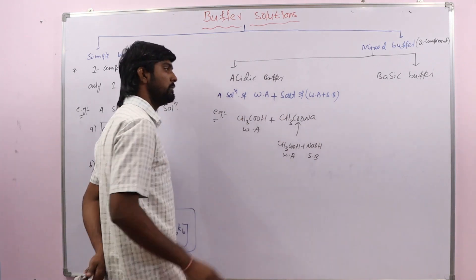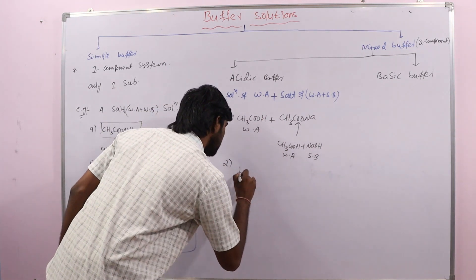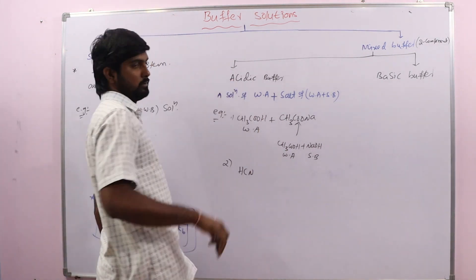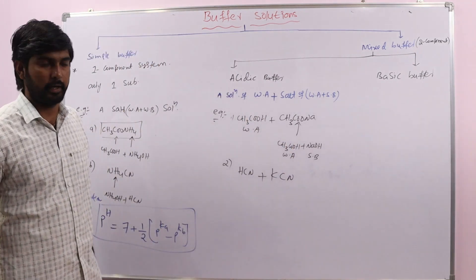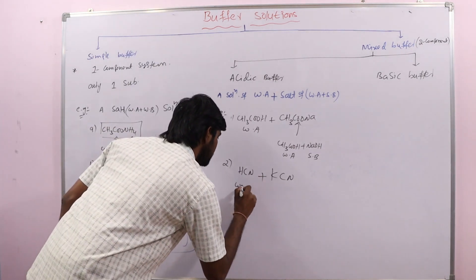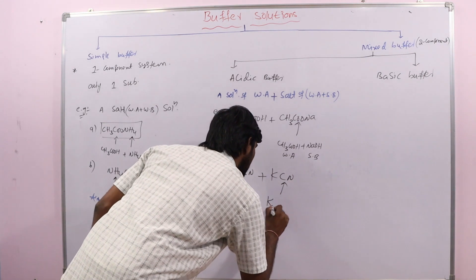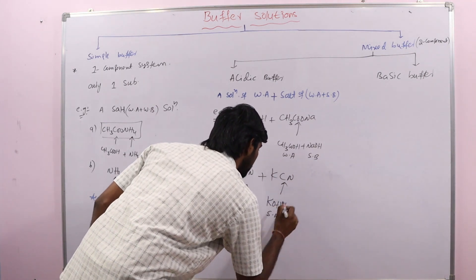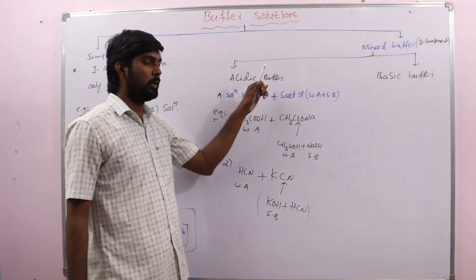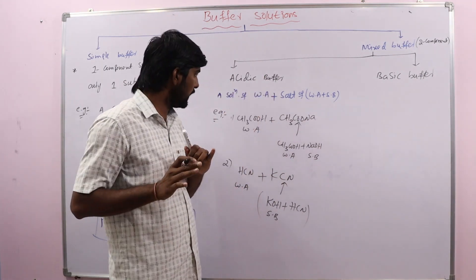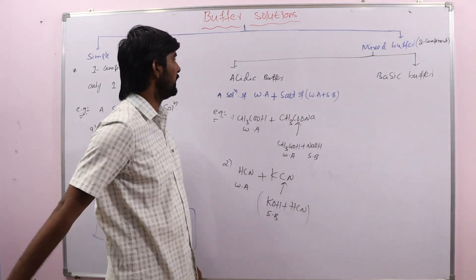One more example: HCN is a weak acid, and KCN (potassium cyanide) is its salt formed by the combination of the strong base KOH plus the weak acid HCN. So acidic buffer: a solution of weak acid plus the salt of the same weak acid with any strong base is considered an acidic buffer.